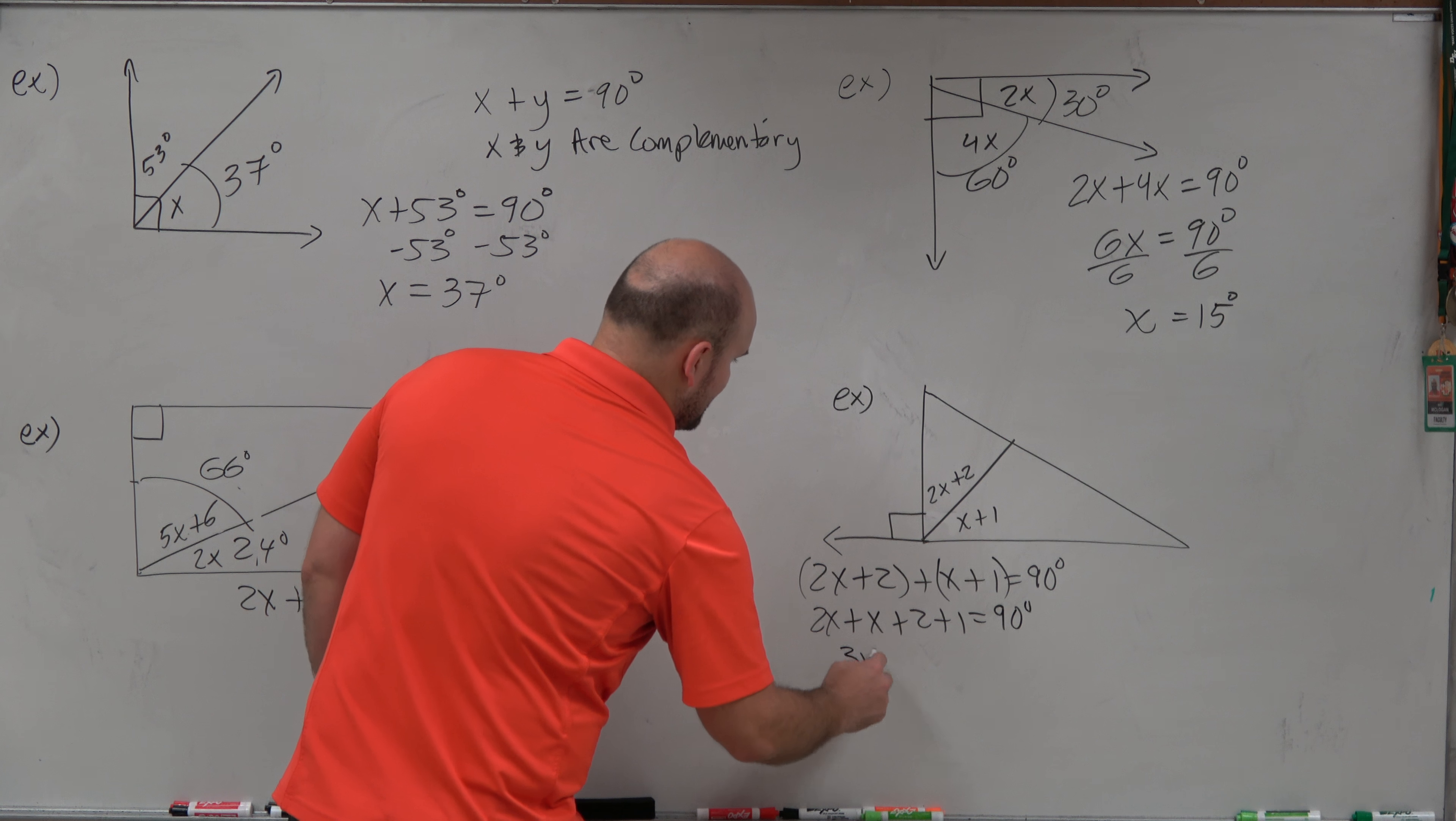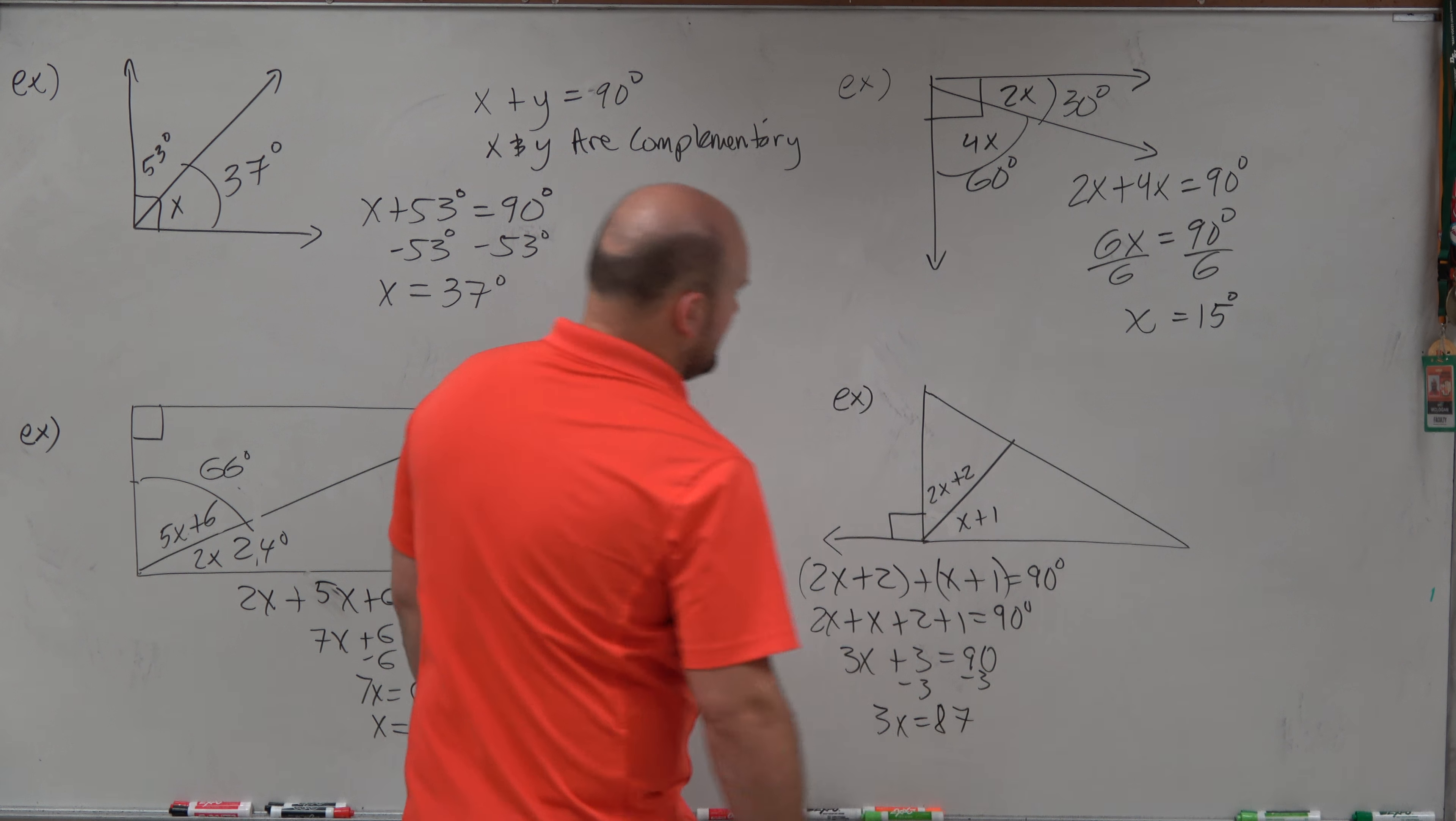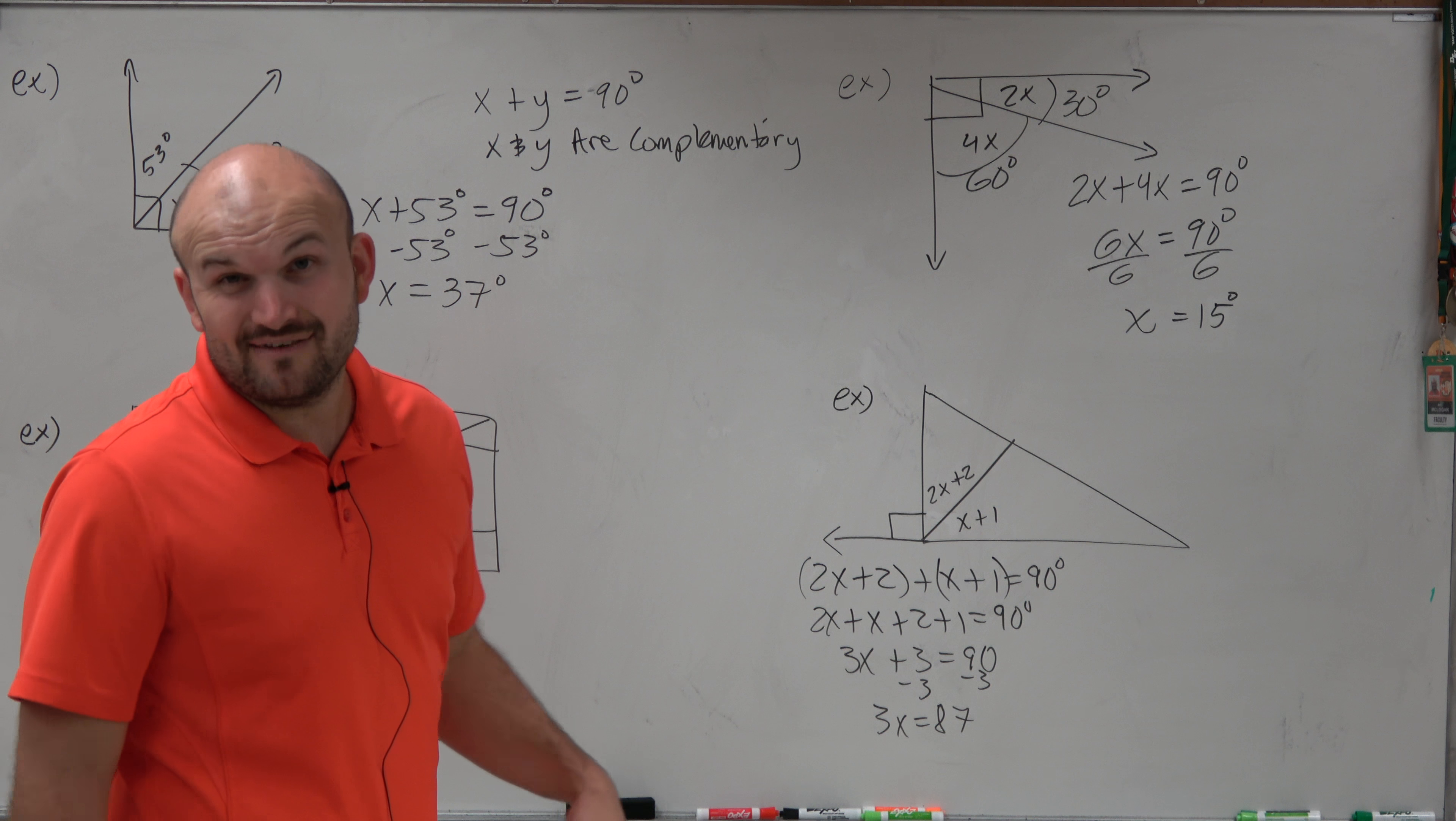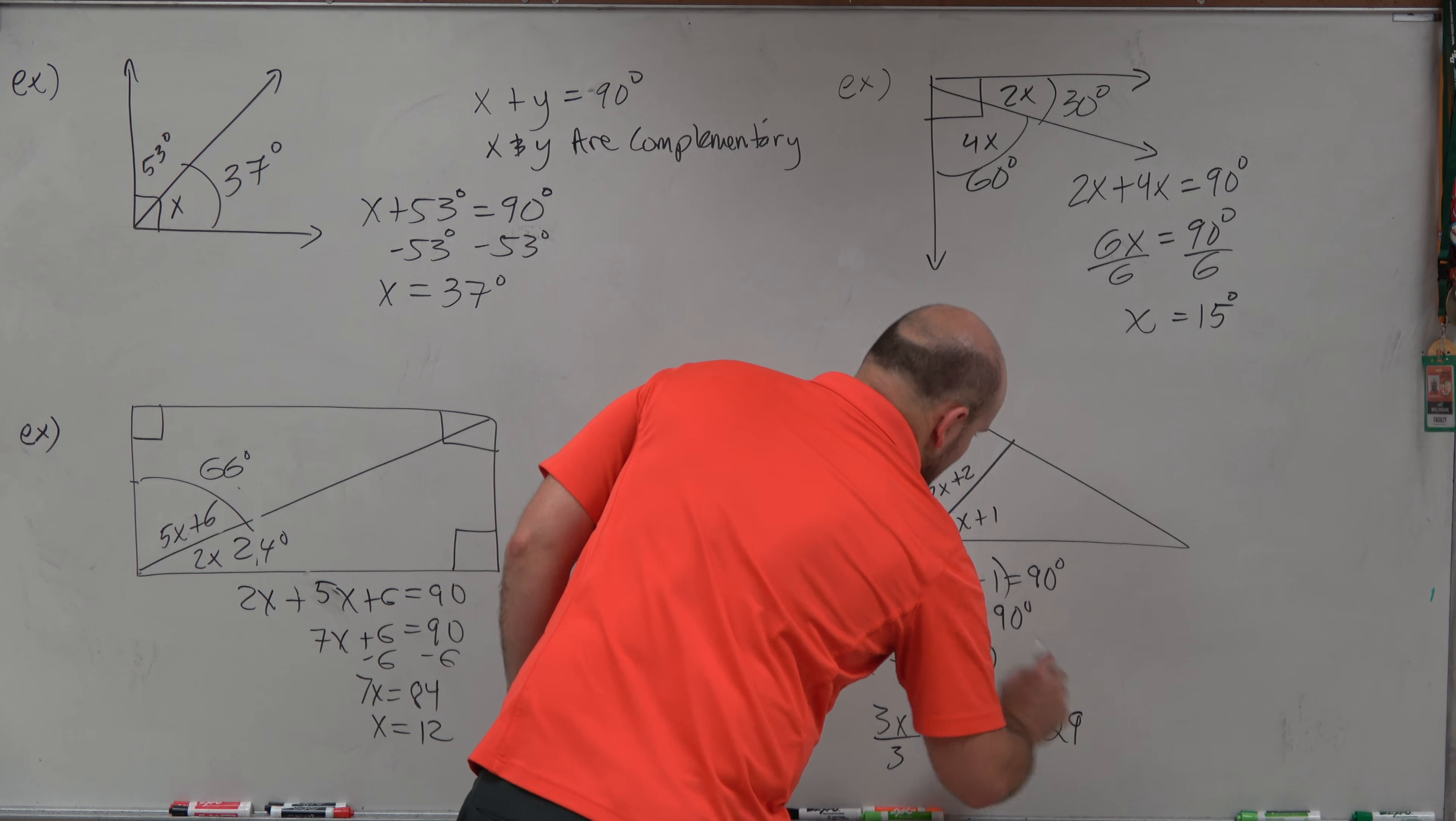Therefore, I obtain 3x plus 3 equals 90 minus 3 minus 3. 3x equals 87. Now 3 would have gone into 90 thirty times. So therefore, it goes into 87 twenty-nine times. So divide by 3, divide by 3, x equals 29.